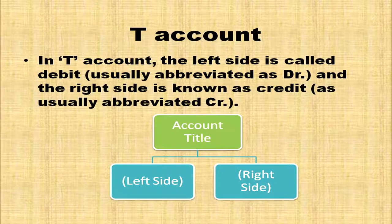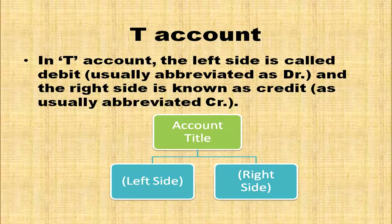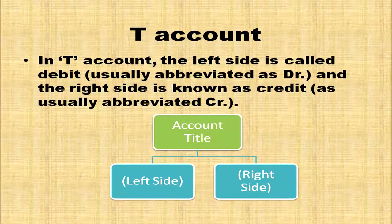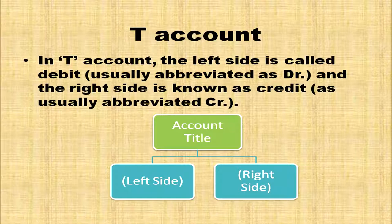We have a T-formatted account. The left hand side is called Debit, abbreviated as Dr. (capital D, small r, and a dot). And the right hand side is indicated as Cr. (capital C, small r), meaning it is the credit side.